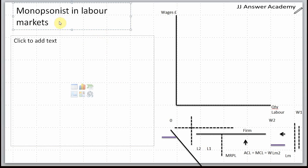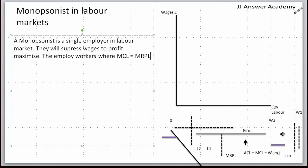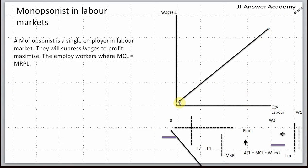In this video we'll learn about how monopsonists operate in labor markets. A monopsonist is a single employer in labor market and they will suppress wages to profit maximize. The monopsonist will employ workers where MCL equals MRPL. In the market, the supply curve for labor is upward sloping.